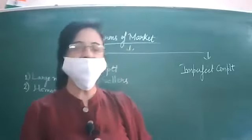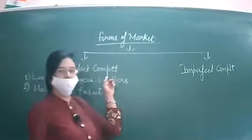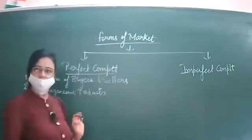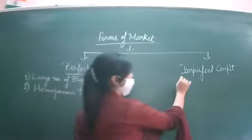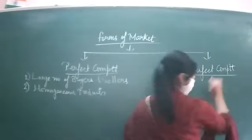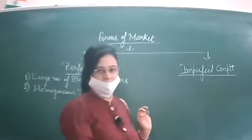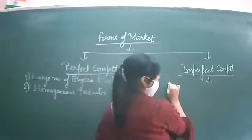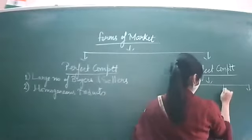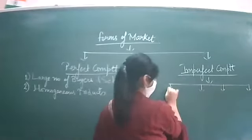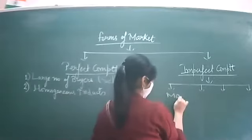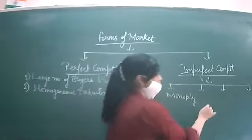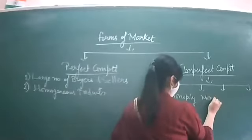Now let us discuss the different forms of market. Market can be broadly classified into two categories: one is perfect competition, and the other is imperfect competition. Imperfect competition can further be classified into monopoly, monopolistic competition, and oligopoly.